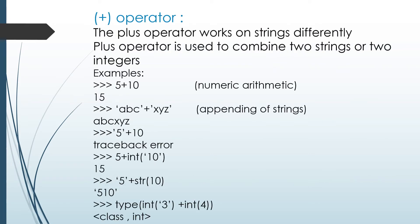The plus operator is an arithmetic operator used to add two numbers, but with strings it is used differently — it combines two strings. For example, 5 + 10 gives the numeric output 15. Adding two strings in single quotes, such as 'abc' + 'xyz', concatenates them and gives output 'abcxyz'. Adding one integer and one string gives a traceback error.